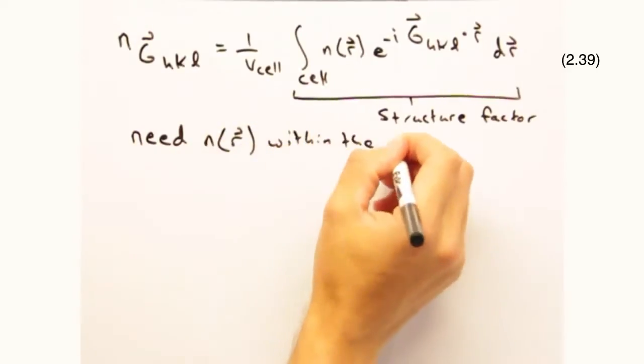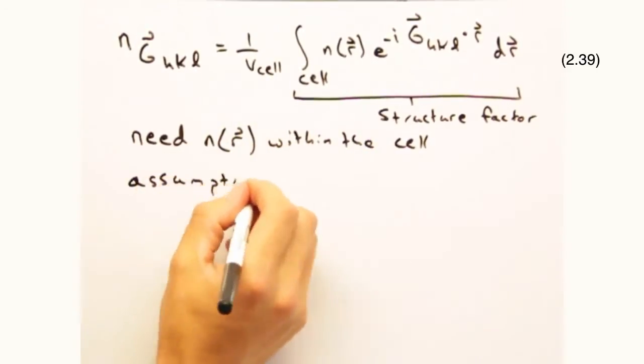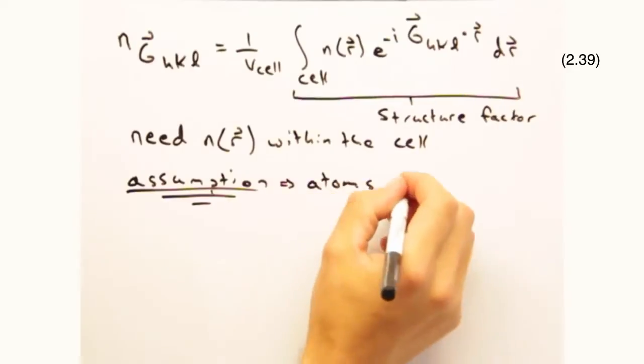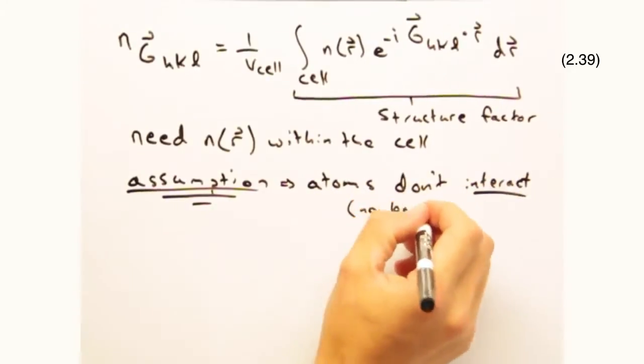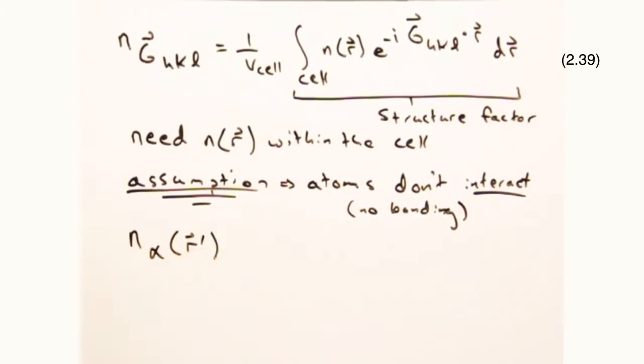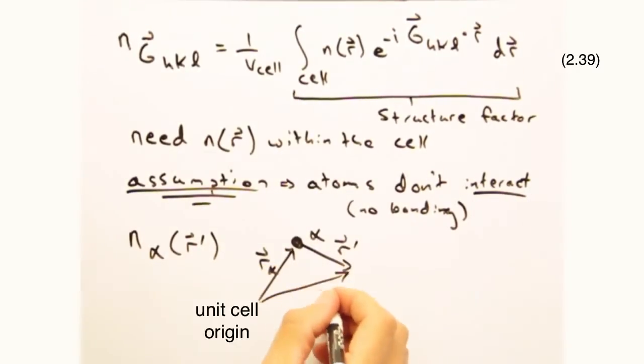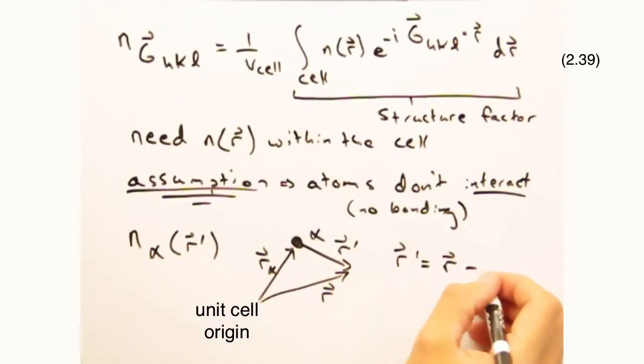Yeah, and so to describe the scattering density within one unit cell, we'll first invoke that the atoms within the cell don't interact with each other and have their own local scattering density called n_alpha as a function of r prime. Where r prime points from the atom to some position vector r.